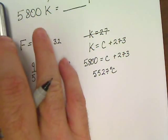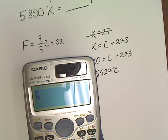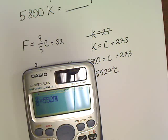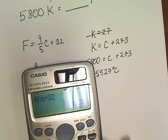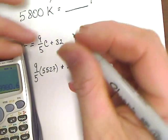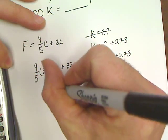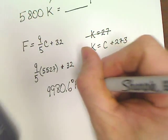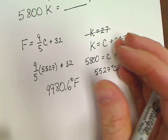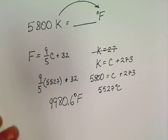So in this case, let's see: 9/5 times 5527, and now I'm going to add my 32 to it. 9980.6 degrees Fahrenheit. This is another great sig fig question too.